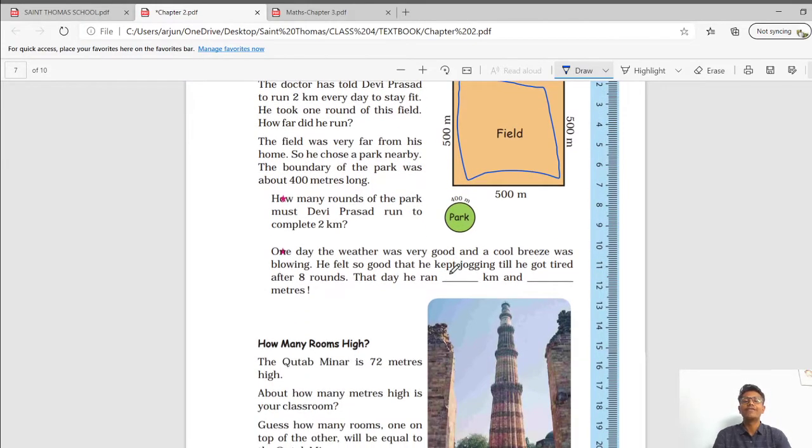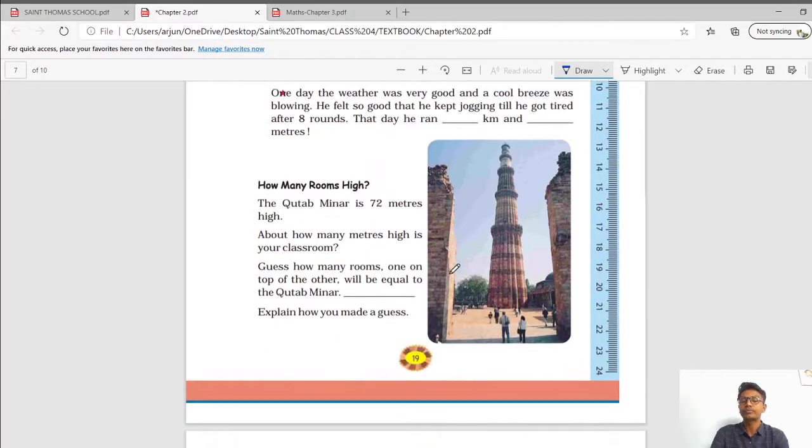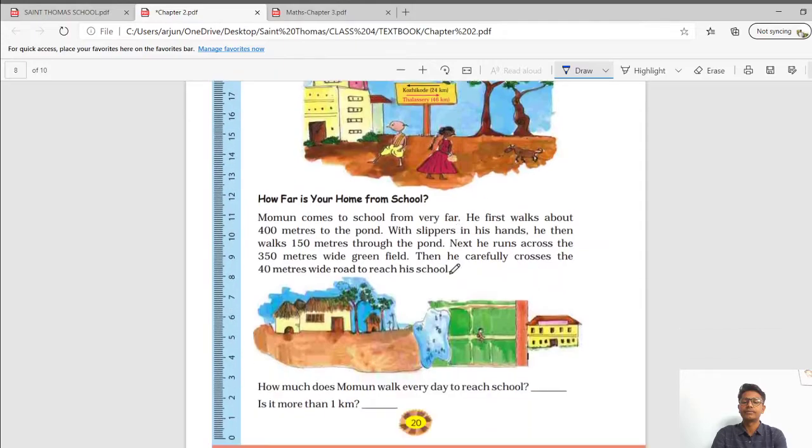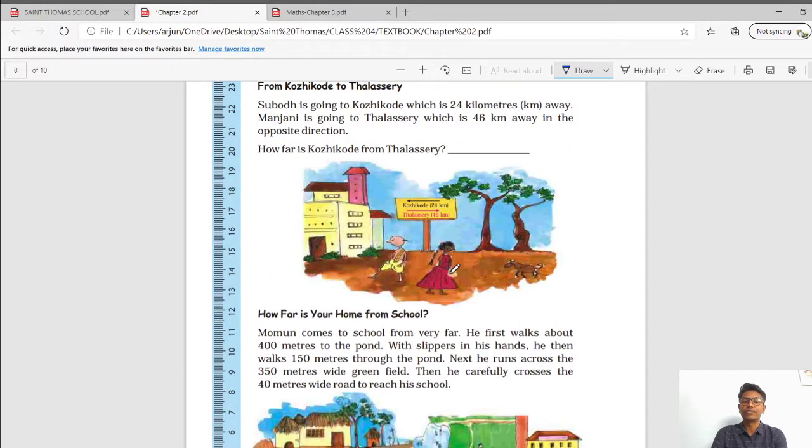He ran through the boundaries of the field. He completed one round. We have to calculate total running distance. 500 plus 500 which is equal to 1000, 1000 plus 500, 1500, 1500 plus 500 which is equal to 2000 meters. And dividing 2000 meters by 1000, we will get 2 kilometers. For converting meters into kilometers, we usually divide it by 1000.